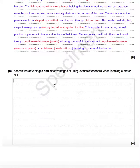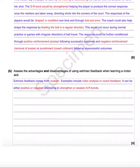Next question: assess the advantages and disadvantages — note that word is in bold — of using extrinsic feedback when learning a motor skill. Again, first of all we have to identify extrinsic feedback. It's not extrinsic motivation, which is about rewards and trophies and medals — it's extrinsic feedback, so be careful not to get the two mixed up. A little bit of time to think and make sure you've got the right concept is important in exams. This is for four marks, so we're going to plan our answer, and this model answer will contain more than those four marks to help you along the way.